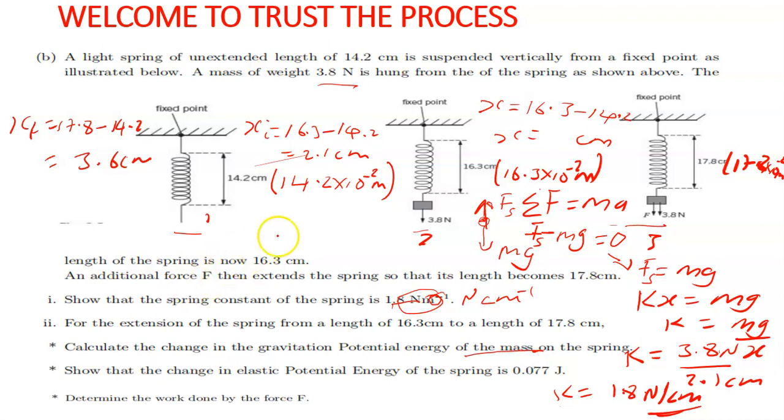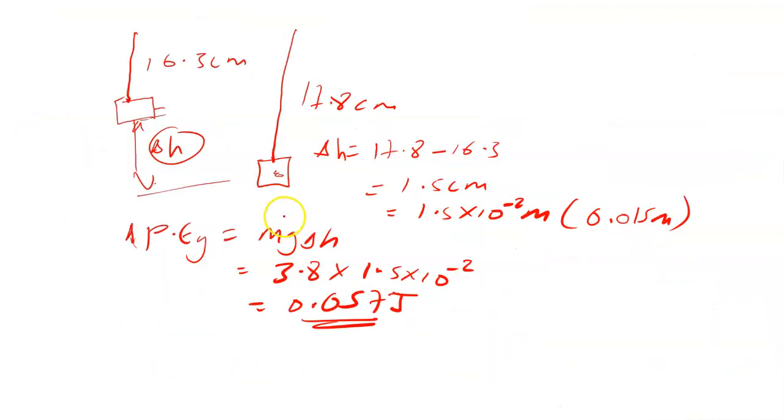How do you find the elastic potential energy? The elastic potential energy, PE, is given by 1 over 2kx squared, where k is the spring constant and x is the extension.